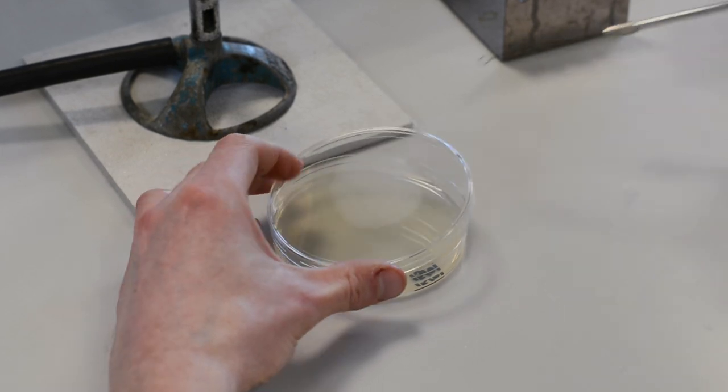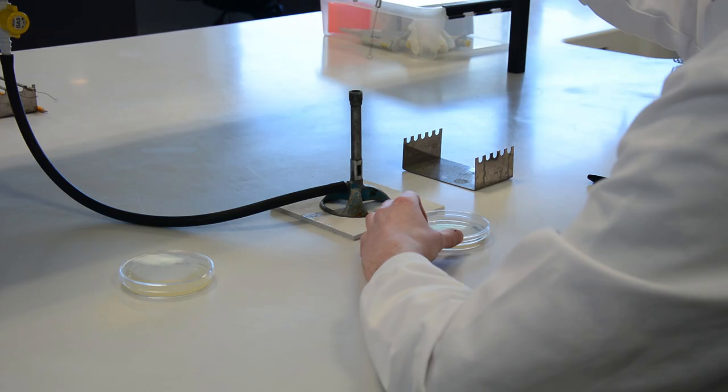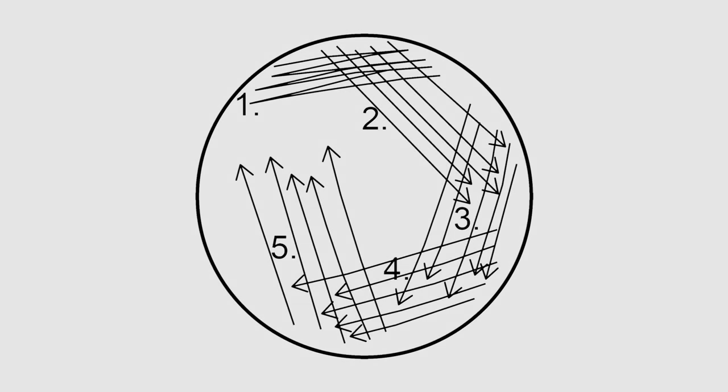After sterilizing the loop again, a third set of parallel streaks are made, as shown in part 4 of the drawing.